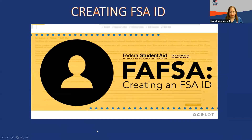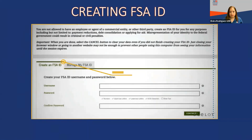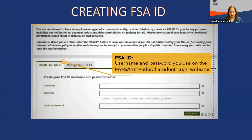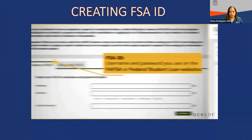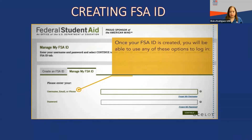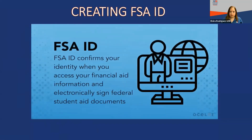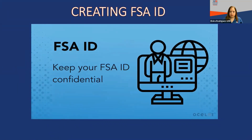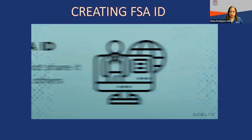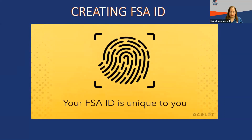The FSA ID is the username and password you will use on federal student aid websites such as the FAFSA or federal student loan websites. Once your FSA ID is created, you will be able to use your username, email address, or mobile number to log in with your password. Your FSA ID is used to confirm your identity when you access your financial aid information and electronically sign federal student aid documents. It is important to keep your FSA ID confidential and not share it with others. Your FSA ID is unique to you.